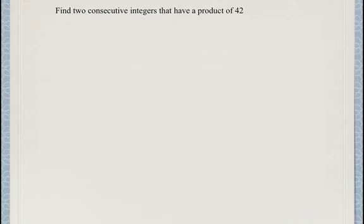In this question we're asked to find two consecutive integers that have a product of 42. We can consider two negative integers or two positive integers, and we're going to see what I mean by that when we look at the solution.